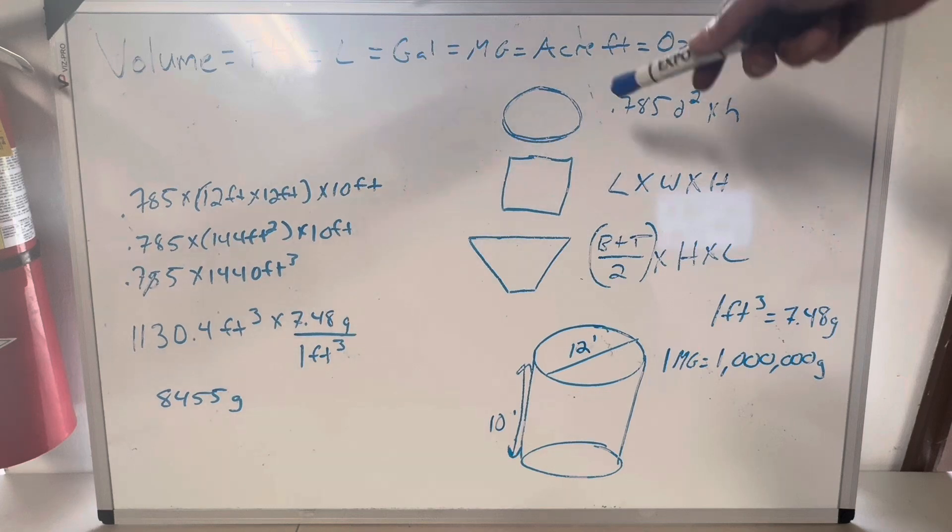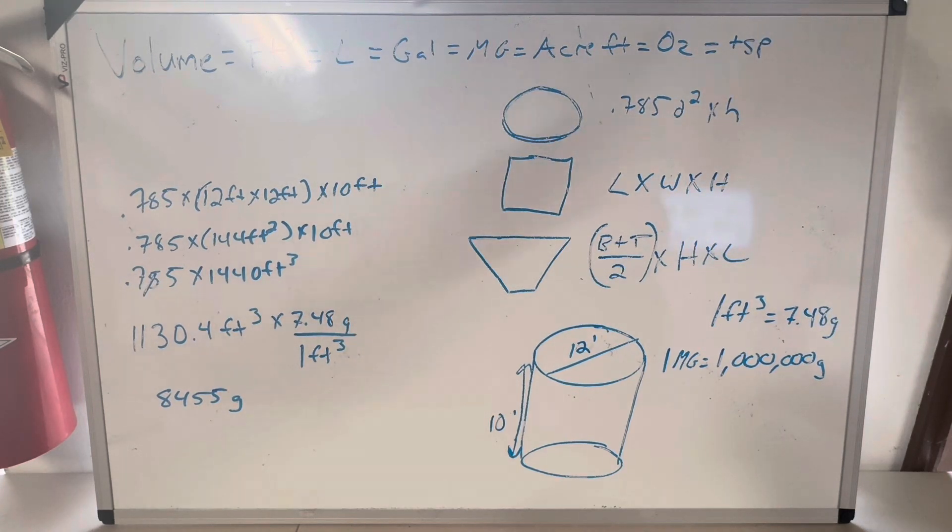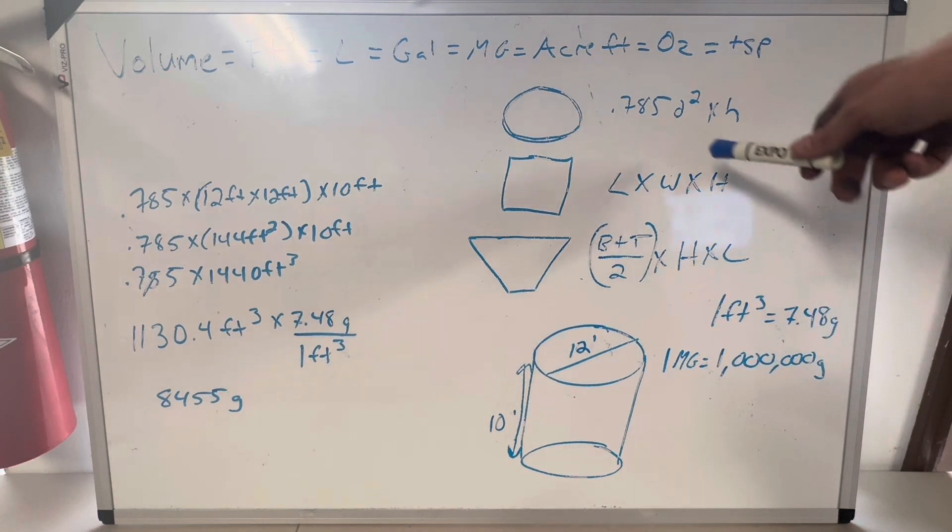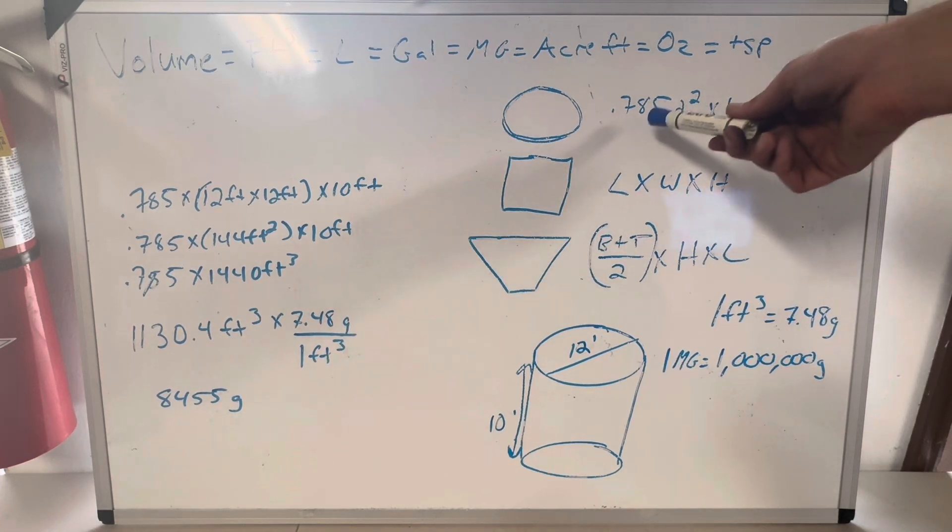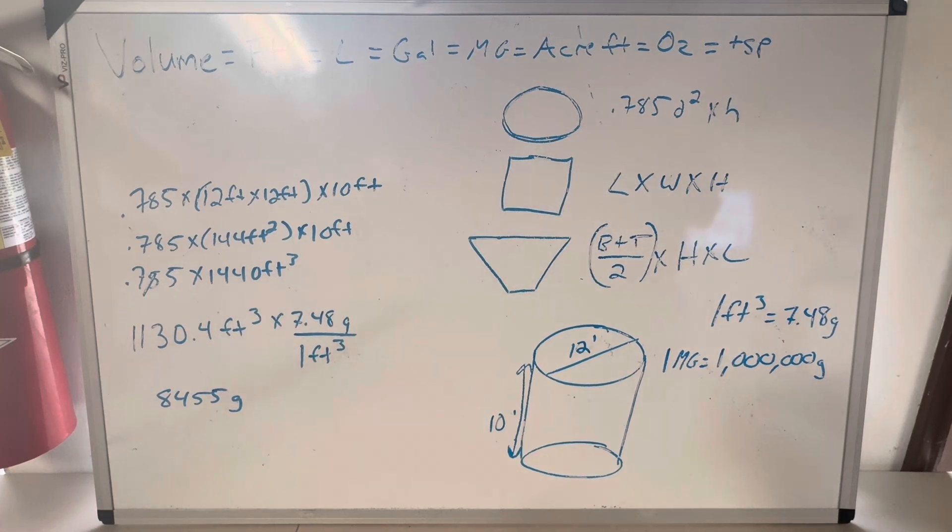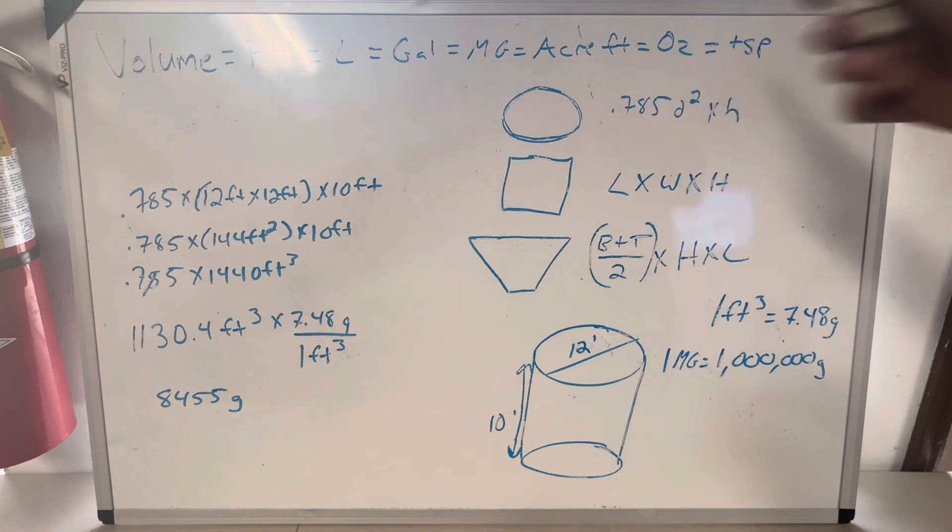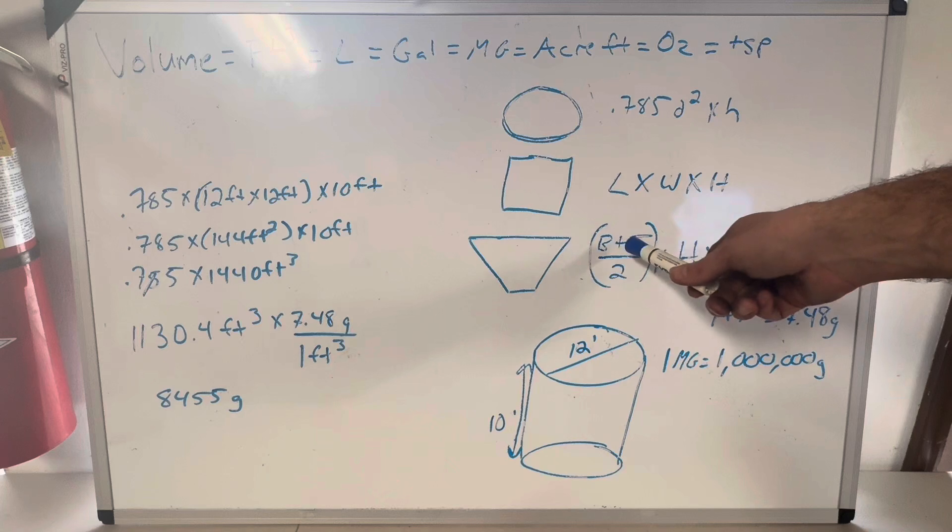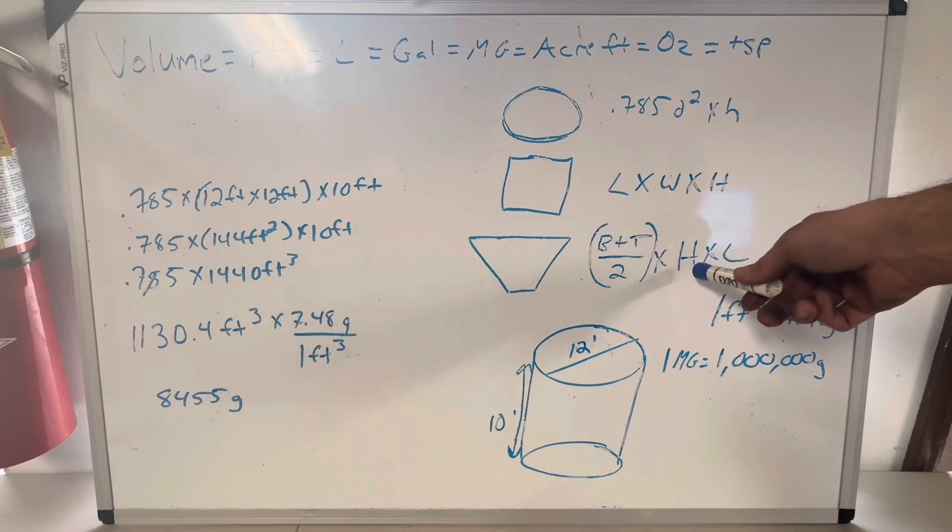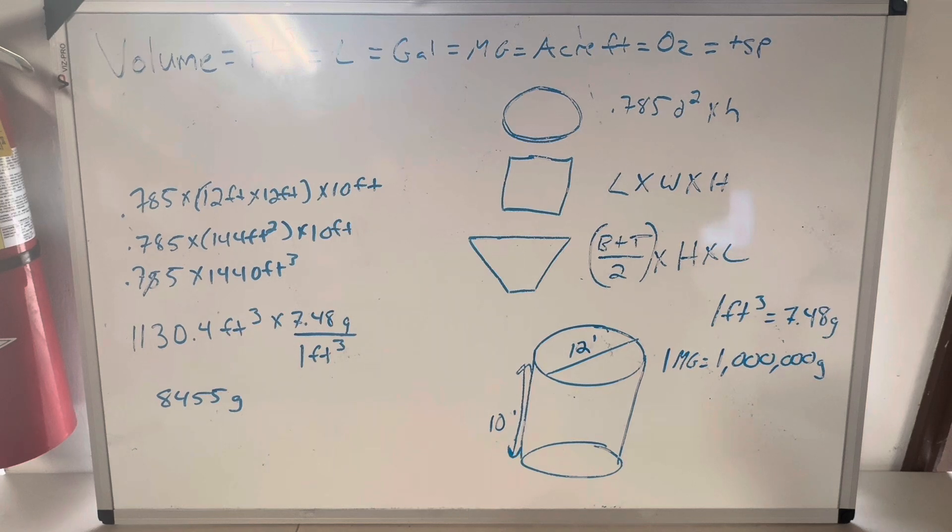So let's start talking about the three most common shapes and what they become. A circle becomes a cylinder or a tank or a pipe. The equation for finding the volume is 0.785 diameter squared times height. You can also do pi r squared for the area if you want, but I'm going to teach it as diameter squared because it's my preferred method. Square or a rectangle becomes a cube or a box, and that is length times width times height. And then a trapezoid is base plus top divided by two multiplied by height multiplied by length. These become like grit chambers and oxidation ditches and any kind of flow channel that is wider on the top than it is on the bottom.